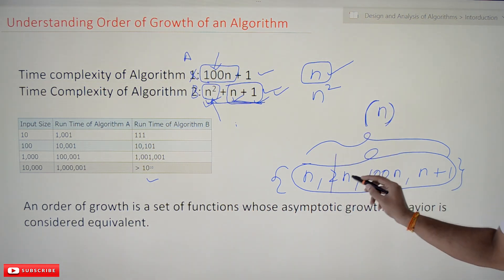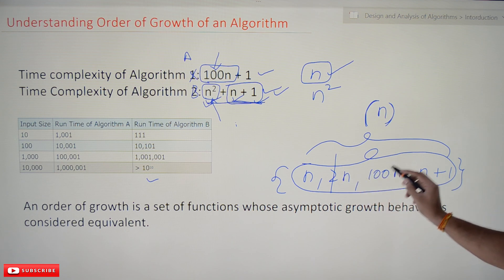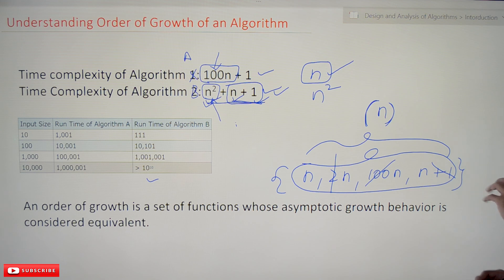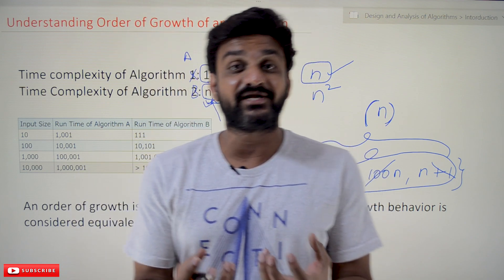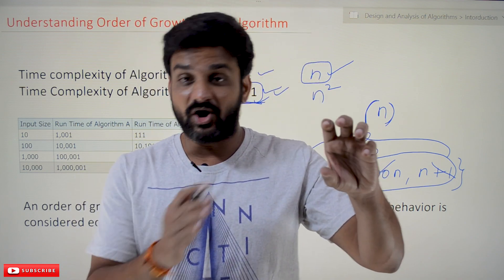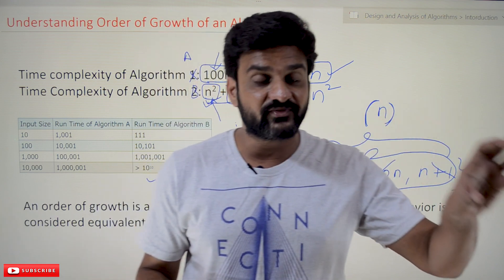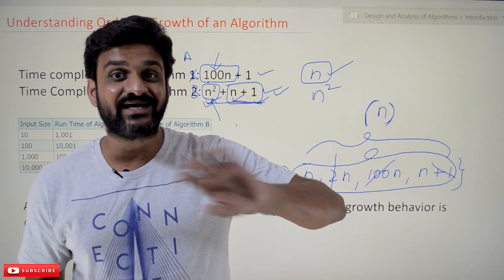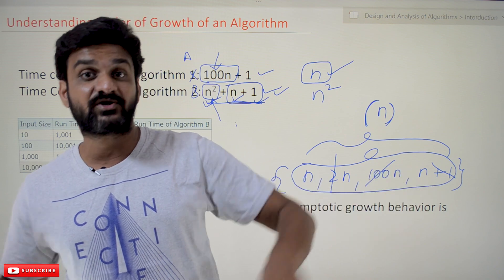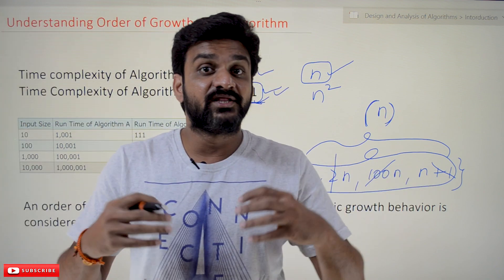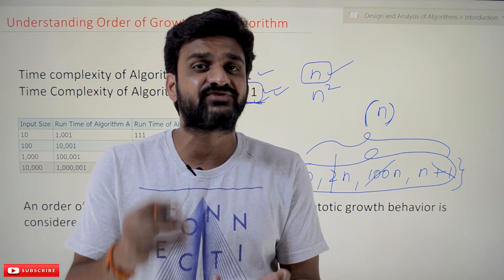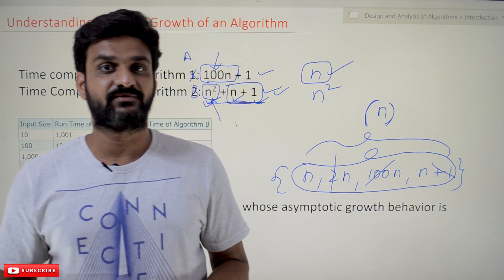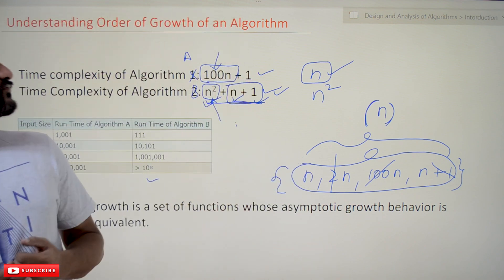We are not considering the coefficients of the higher-order term — those will not be considered. The lower-order terms are also not considered. So when calculating time complexity, the point to consider is only the higher-order term. All lower-order terms and the coefficients of the higher-order term will be considered negligible, because their significance on the rate at which steps are executed is very less compared with the higher-order term. That is what we call the order of growth of an algorithm.